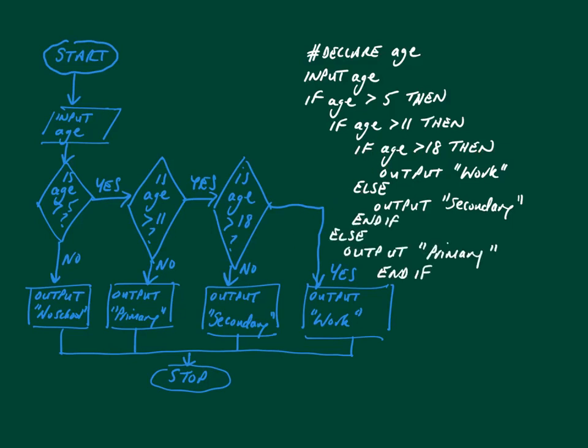And then we can start to move back. So if it's not greater than 18 but it is greater than 11, then we can output 'Secondary'. And then if it's greater than 5 but not greater than 11, we can output 'Primary'. And if it's not greater than 5, we can output 'No school'. And so this is how you represent a nested if using a flowchart.